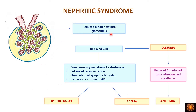Decreased blood flow causes oliguria with reduced glomerular filtration rate. As a compensatory reaction, the body secretes aldosterone, enhances renin secretion, and stimulates the sympathetic system to contract blood vessels and force blood into the kidney. However, because the lumens are very narrow, blood cannot flow through — more blood pools up in the vessels, causing hypertension. Additionally, increased secretion of antidiuretic hormone causes retention of sodium and water, and fluid enters the interstitial tissue causing edema.